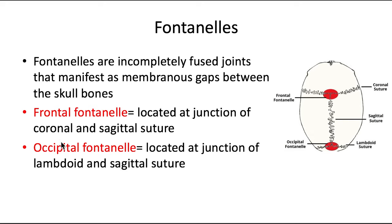There are two fontanelles to remember. The frontal fontanelle is located at the junction of the coronal suture, which crosses horizontally, and the sagittal suture, which is right in the center. The occipital fontanelle is in the back, located at the junction of the sagittal suture and the lambdoid suture at the back of the skull.